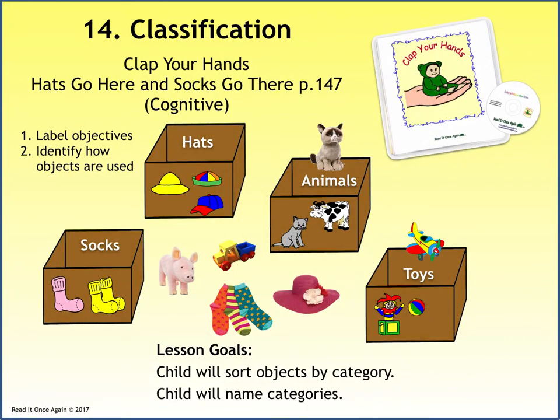Props matching the illustration from the story Clap Your Hands are used in the Hats Go Here and Socks Go There classification activity found in the cognitive section. The number of props and classification boxes depends on the ability of your students — adding visual cues to the front of the box, and sight words for older children. Children sort the objects by category and then name the categories.